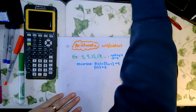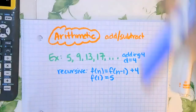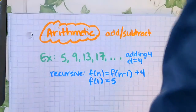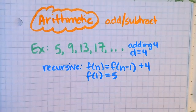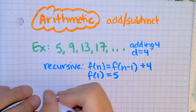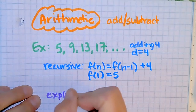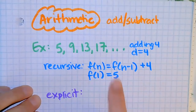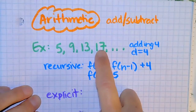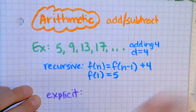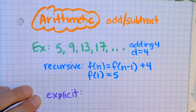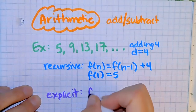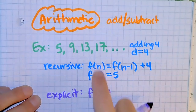The next one I'm going to look at is writing it as an explicit. For the explicit equation, you want to be able to put in — let's say four for the fourth term — and get out your value. You want to be able to get a 17 out if you put four into your explicit equation. So you're going to start F of N equals, just like the recursive.